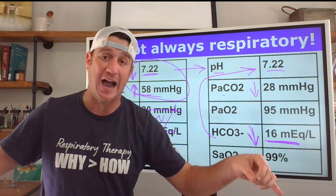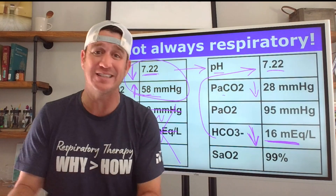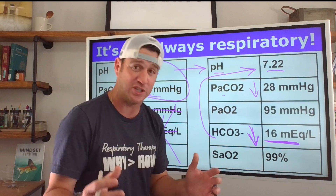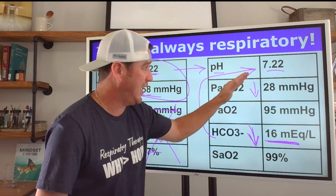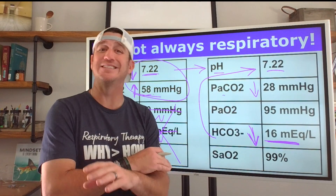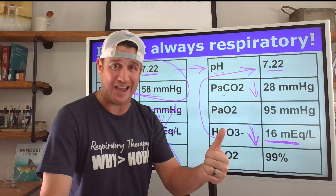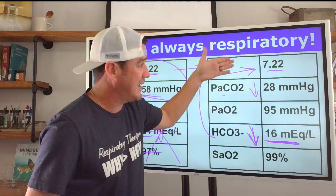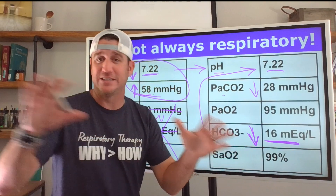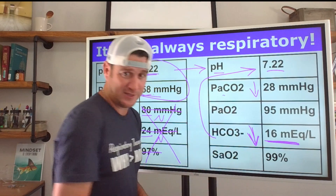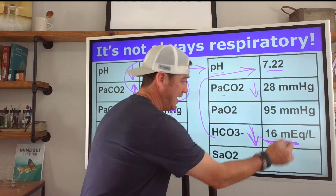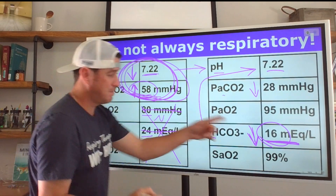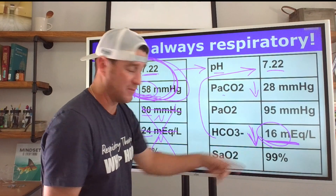Do we need to ventilate this patient? Probably not. We need to identify the root cause of the metabolic acidosis and fix that. The answer might be to give bicarb, but giving bicarb is not always the answer to fix metabolic acidosis. In cases like lactic acidosis or diabetic ketoacidosis, giving bicarb will not fix the problem — it will just mask the pH. What's causing the acidosis? Here it's metabolic; over there it's respiratory. Ventilate the respiratory patient, not the metabolic patient. Fix the metabolic disturbance to fix your patient.